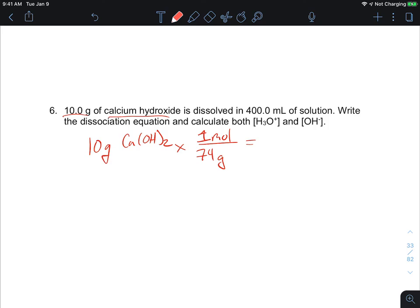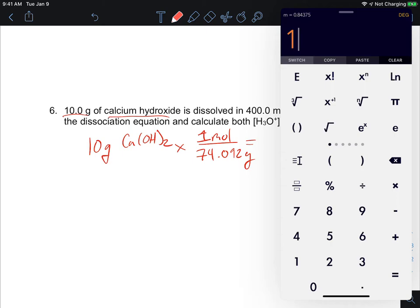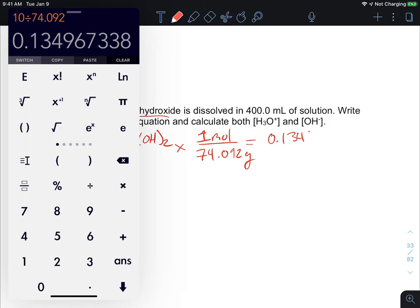Which is for one mole or molar ratio, I guess we have 74 grams per mole. That's not a particularly exact value, but okay, it's pretty close to 74.092 grams. So I'm going to multiply that out. I'm going to do 10 times 1 divided by 74.092, so I get 0.134, I'm going to keep all my digits here for a second moles.